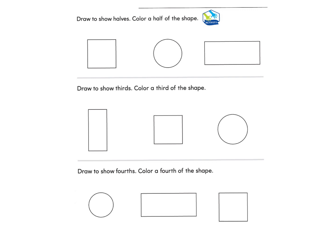We're ready to look at page 557. We're going to start at the top, which asks us to draw to show halves, then color a half of the shape. First we draw a line to show halves, then color just one half — only one. I'm going to cut the circle in half and then color in one of the halves. I'm only coloring in one, and now I have colored in one half.